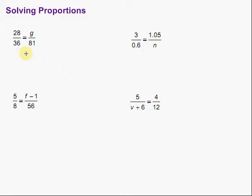And when we have that, the cross products are also equal. So we can use that fact to solve for variables if we're given three of the four pieces that make up a proportion.